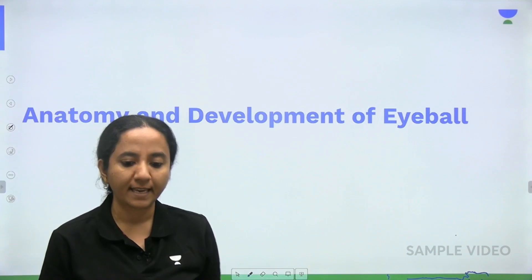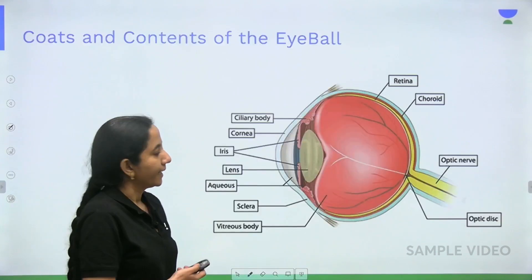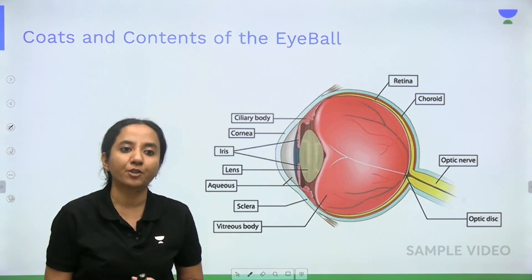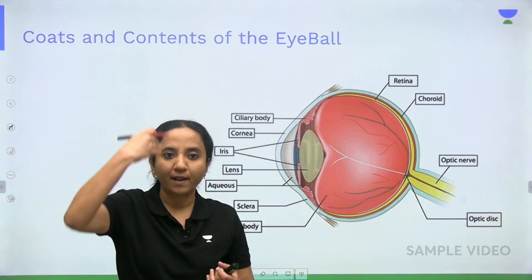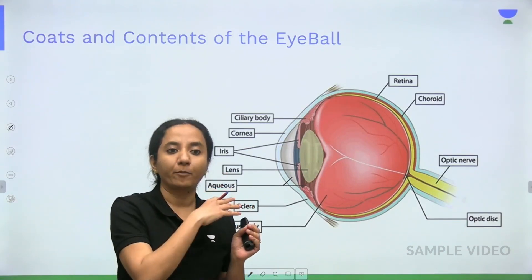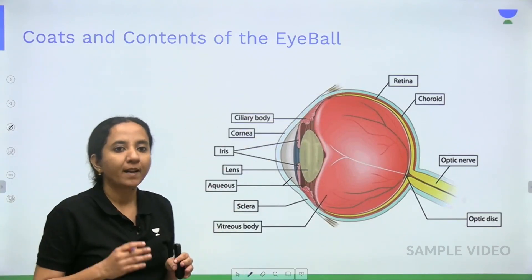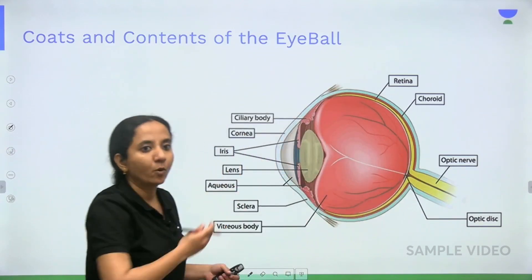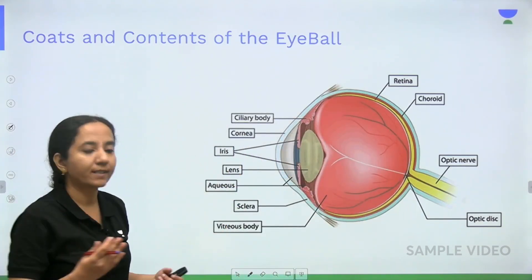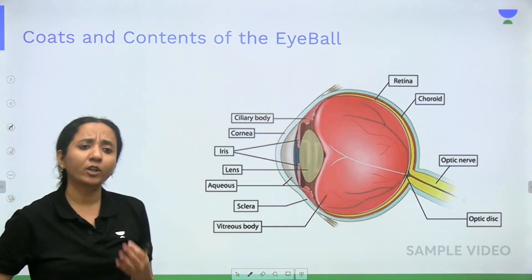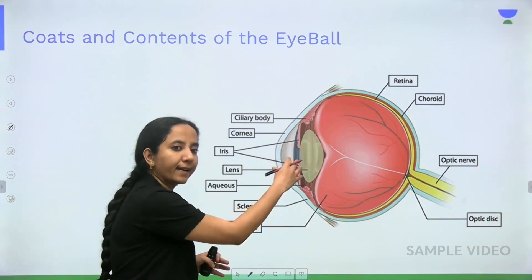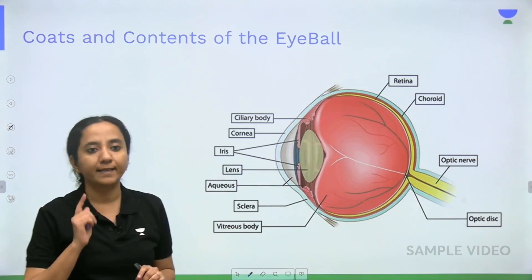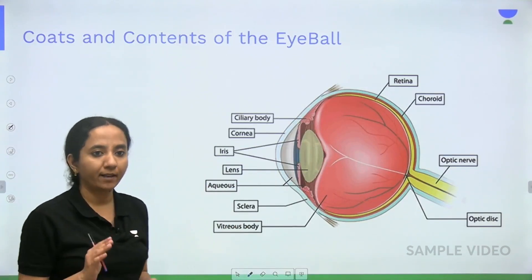To look at the structures of the eye, we first have to create a section. We create a sagittal section. When I create a sagittal section and look at the eyeball from the side, this is the picture that comes to me. When we analyze the structures of the eyeball, we look at the structures in the wall — called the coats of the eyeball — and the contents, which are the structures inside the eyeball.